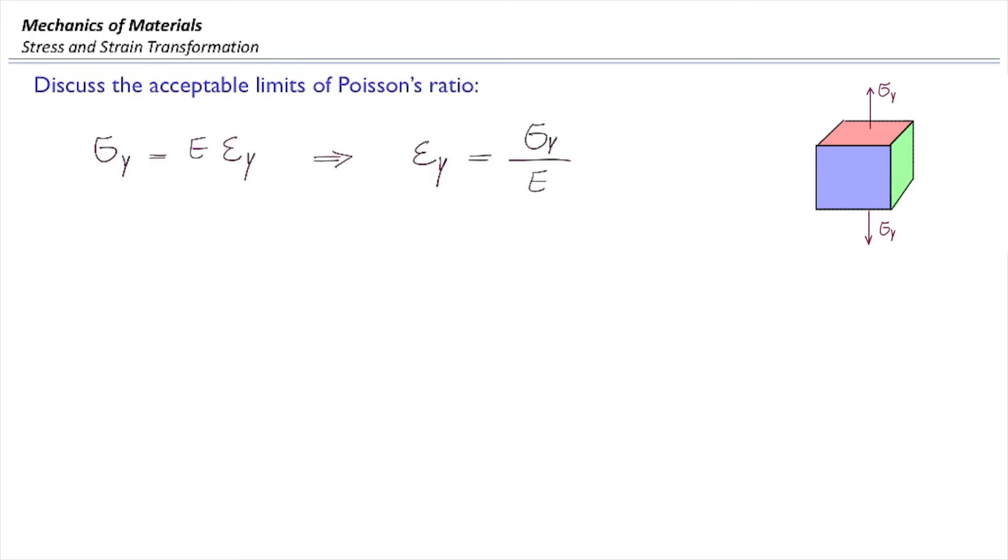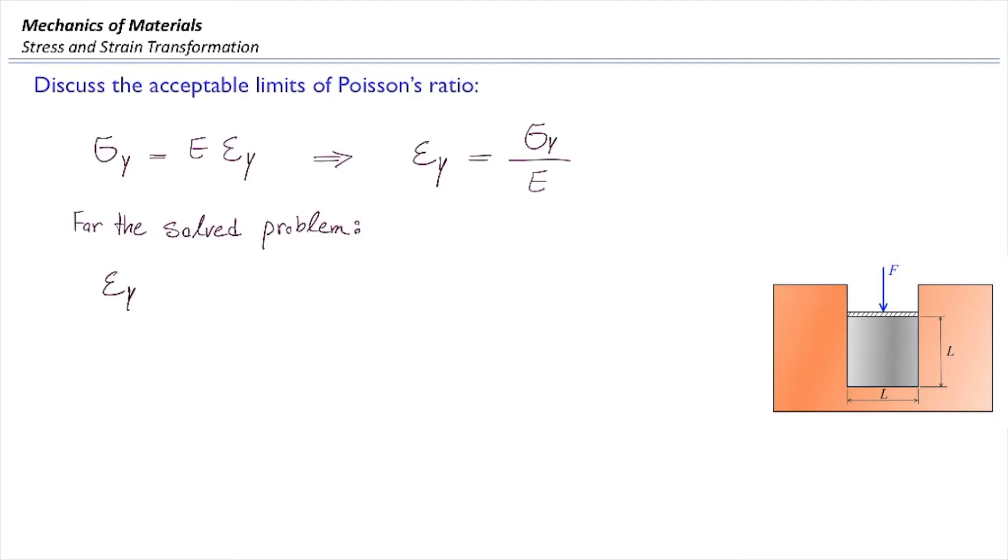This is the case that we have one-dimensional problem. Now I want to compare that with the equation that we just developed for epsilon y. We have seen that epsilon y is different than one-dimensional case, and that is equal to this equation. That factor that is multiplied by sigma y over E is called k. k would be equal to 1 minus 2ν squared divided by 1 minus ν.